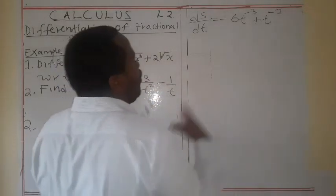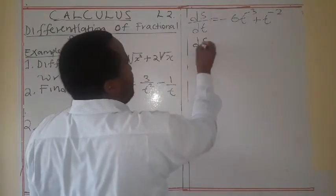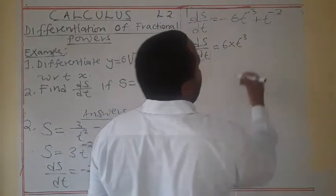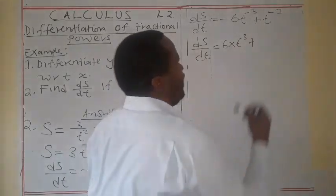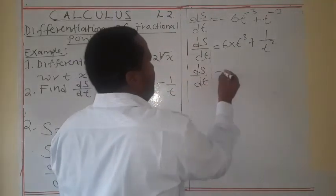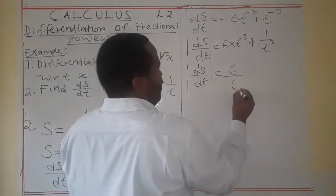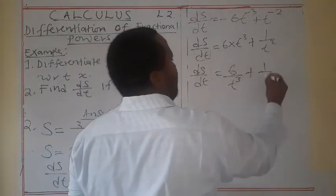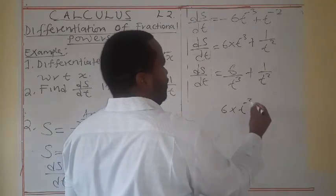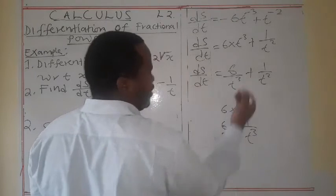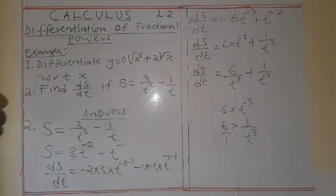But now we don't need the negative index. So ds/dt is equal to: this is 6 times t to the negative 3 — plus — so the negative means minus 1, t squared. So we don't have a negative because of this. So ds/dt is equal to 6 over t to the power 3, plus 1 over t squared. Because 6 times t to the power negative 3 means 6 times 1 over t to the power 3, so when you multiply you get 6 over t cubed. I hope that is clear.